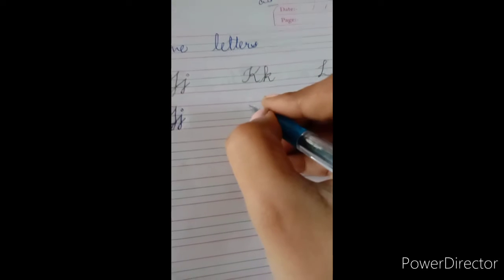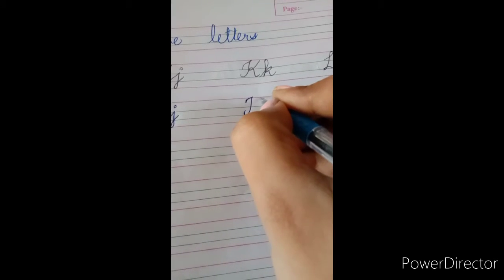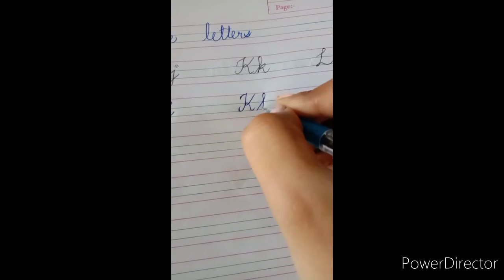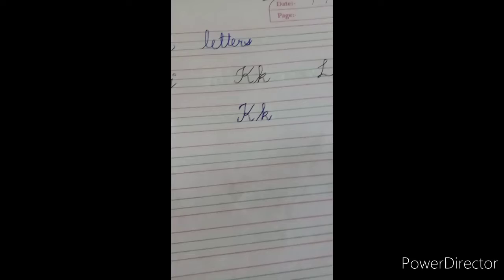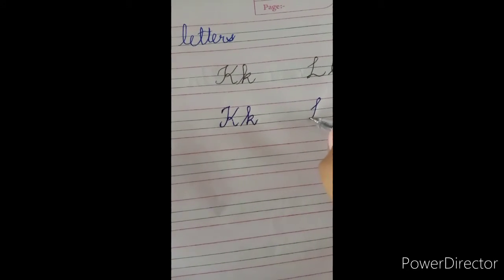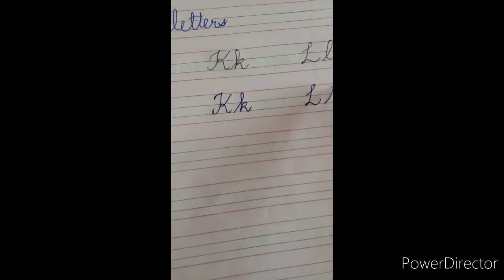K for kite, we are going to write K. L, second line start. And small l to third line.